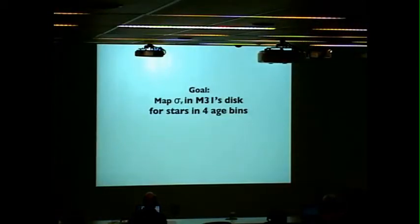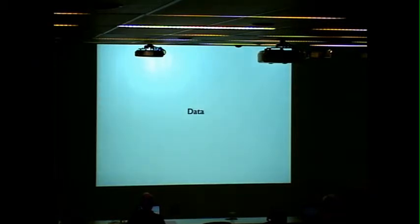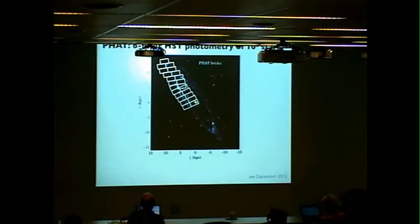So I'm going to tell you about mapping the velocity dispersion in M31's disk separately for stars in four different age bins. We have some fantastic data sets to do this. The first is the panchromatic Hubble Andromeda treasury program, PHAT, which you've already heard about twice today.